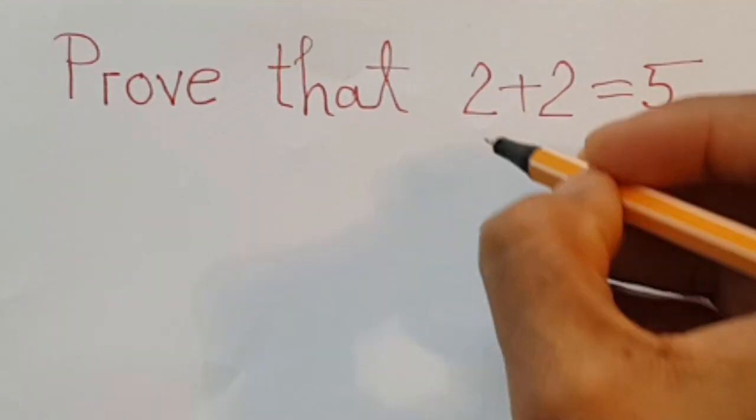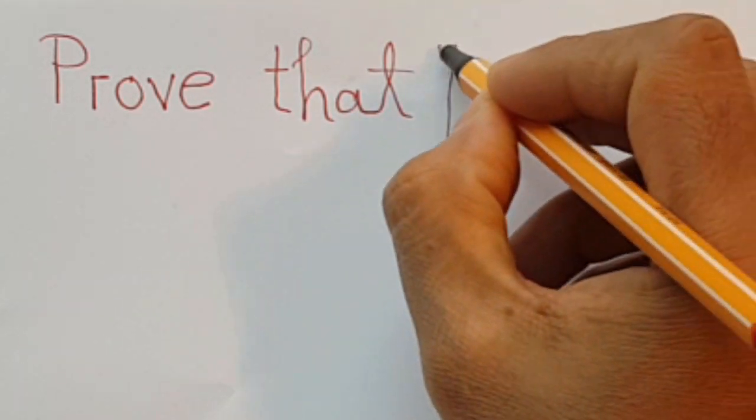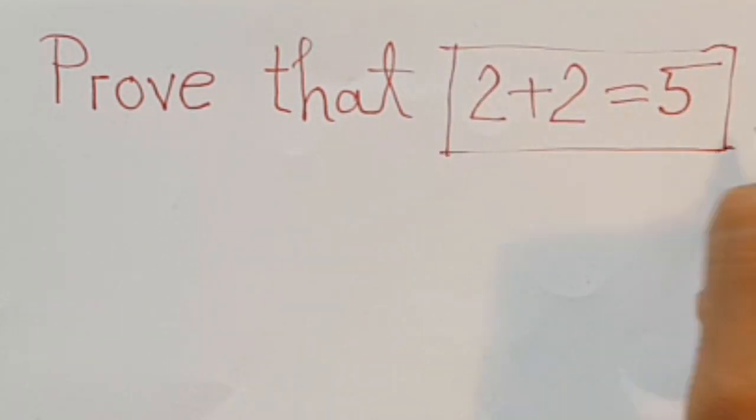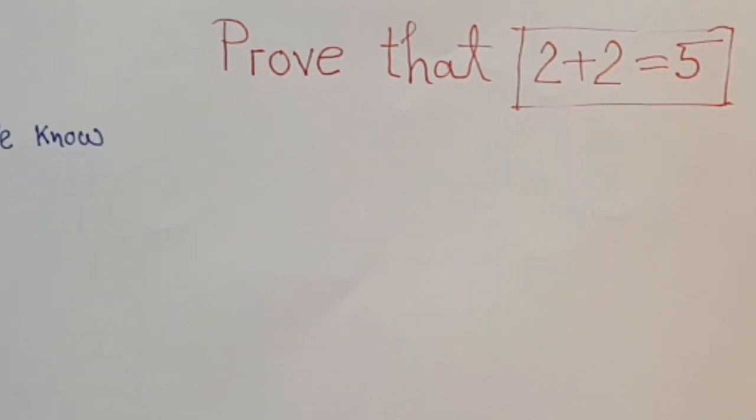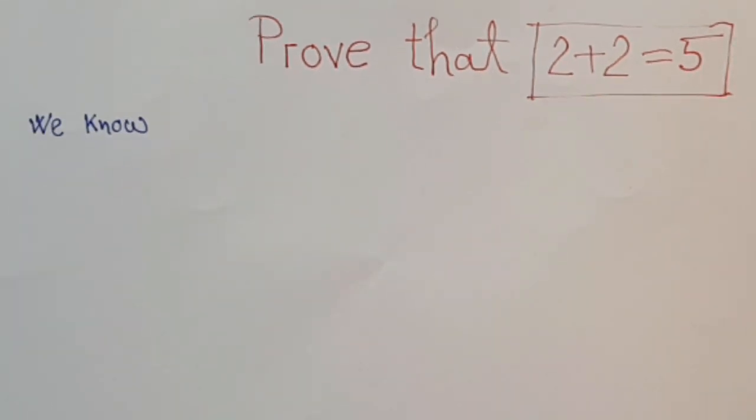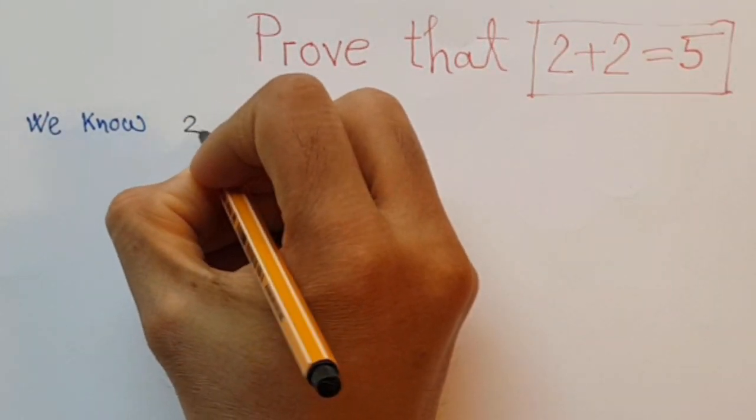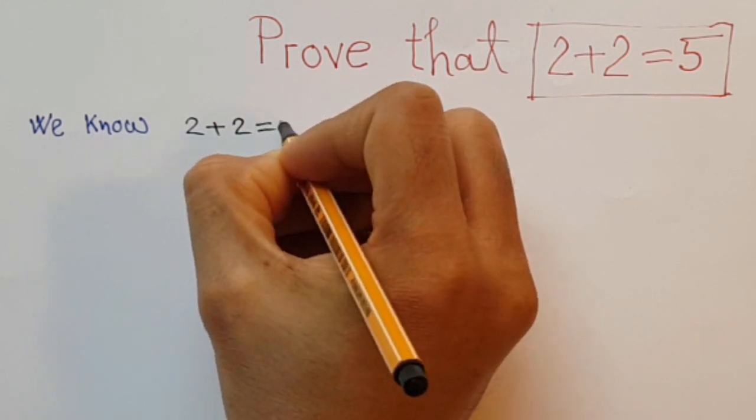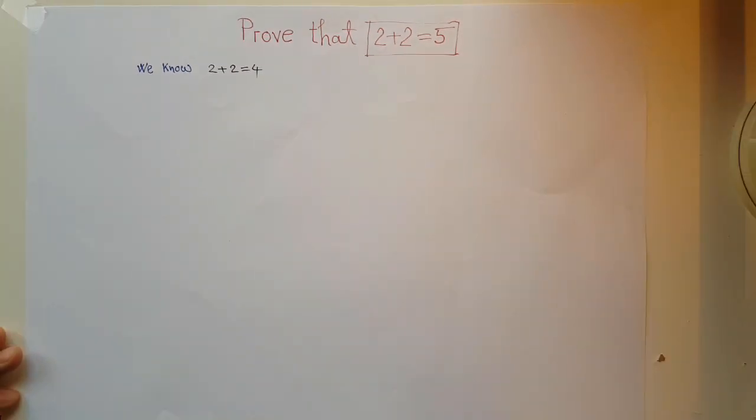As human beings, we cannot accept new things very easily. We observe new things in a very suspicious way. It's our common human psychology. For example, if I prove that 2 plus 2 is 5, you won't believe it, I am sure, because normally we know 2 plus 2 is 4. But I am going to prove 2 plus 2 is 5 in a completely unique different way.